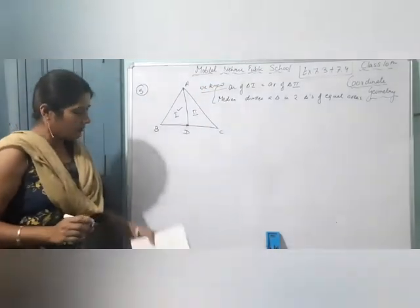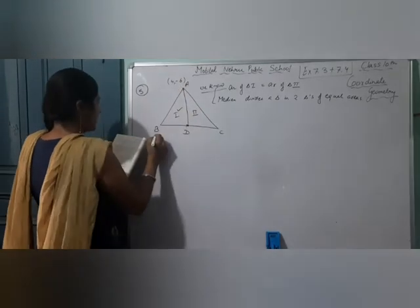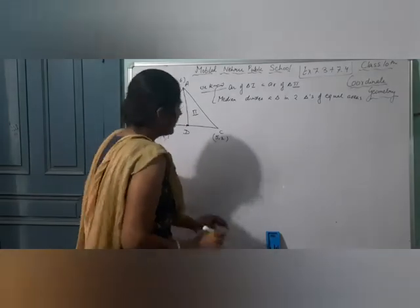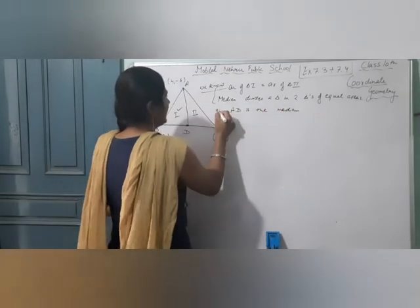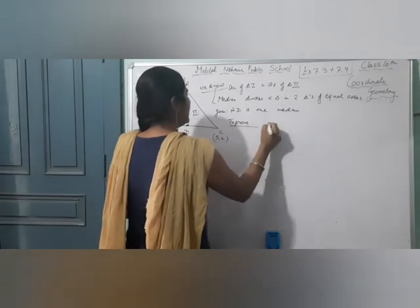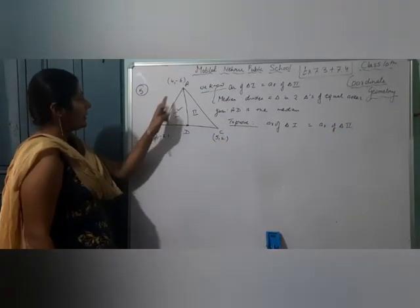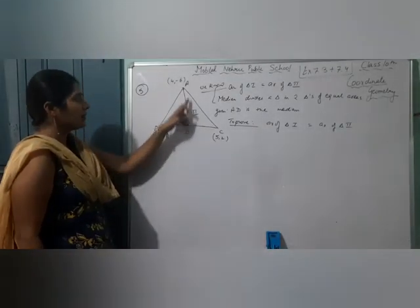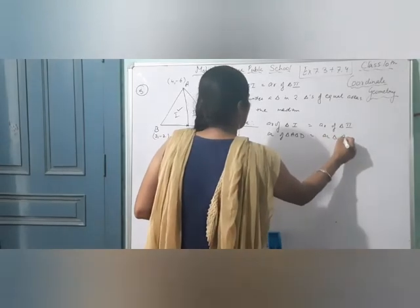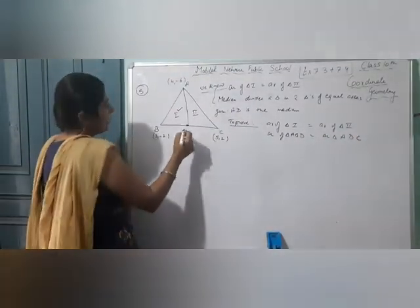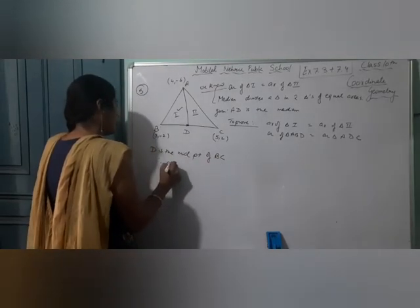We are given triangle ABC with vertices A(4, -6), B(3, -2), C(5, 2). AD is the median. We have to prove: area of triangle ABD is equal to area of triangle ADC. To find these areas we first need the coordinates of D.